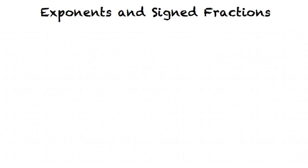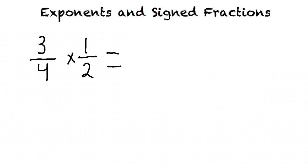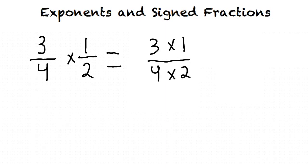If we are given 3 fourths times 1 half, we can rewrite this as a fraction where we multiply the two top terms together and the two bottom terms together. Since 3 times 1 is 3 and 4 times 2 is 8, our answer is 3 eighths. So that's how you multiply fractions.